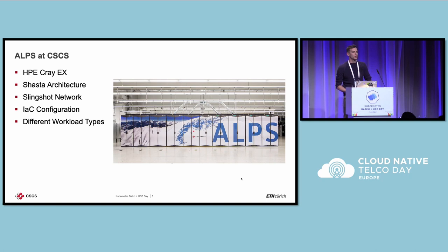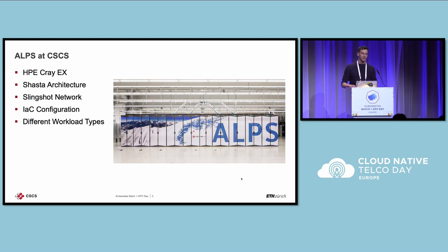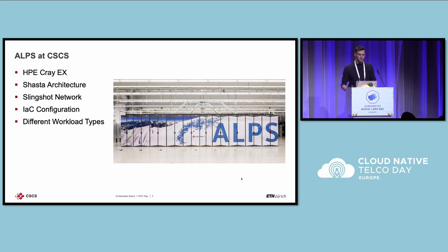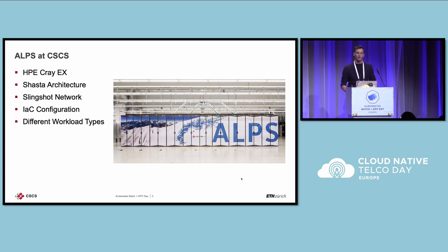To introduce what we are doing at CSCS: we have this new HPC system called ALPS. It's an HPE Cray EX machine using a Shasta architecture and the Slingshot network to interconnect its nodes. It uses infrastructure-as-code methodology to configure the system, and it runs different workload types in what we call V clusters — an abstraction including classic HPC jobs with login nodes, submit jobs on nodes, and also grid-like workloads for WCG and CTA, for example.